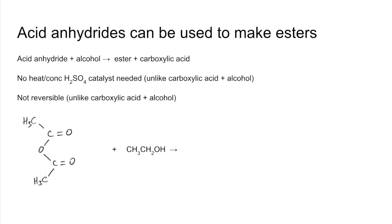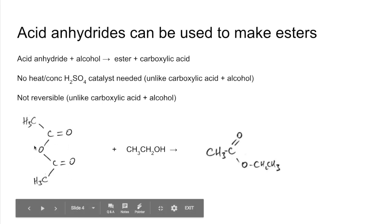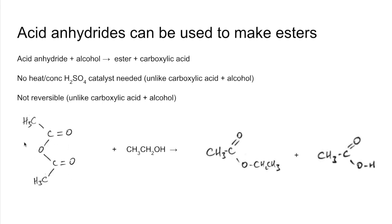So the ester we're going to make, well we're going to take this acyl group here and we're going to take the alkyl group and the O, and so we're going to make ethyl ethanoate. And what's left over is the hydrogen on the alcohol and this part of the acid anhydride, and so we're going to get ethanoic acid.